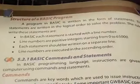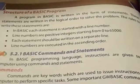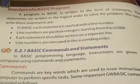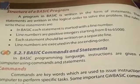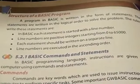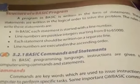Next, we have the structure of a Basic program. A program in Basic is written in the form of statements. These statements are written in a logical order to solve problems. In Basic, each statement is started with a line number. The line number will be a positive integer from 0 to 65,000. Each statement should be written on a separate line.